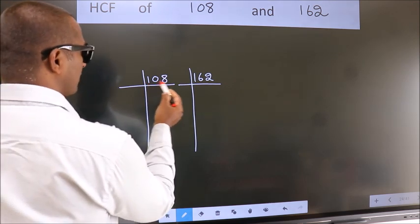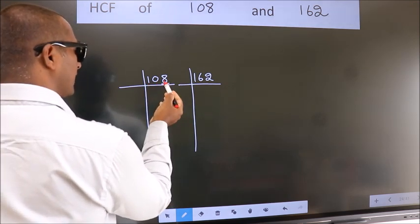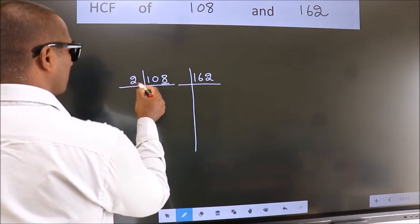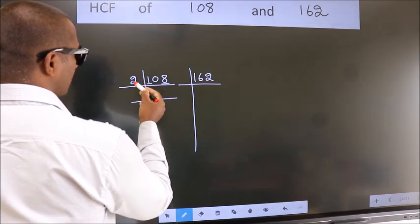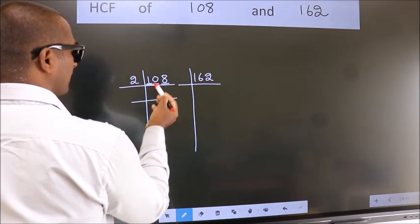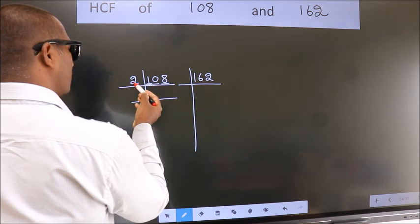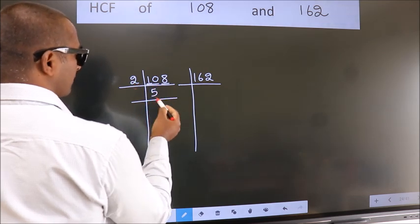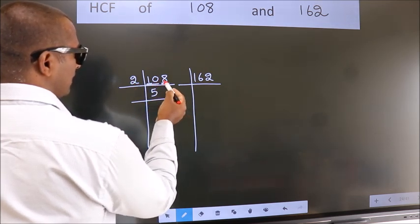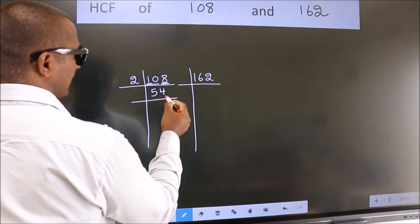In this number, last digit 8, even number, so take 2. First number 1, smaller than 2, so 2 numbers 10. When do we get 10 in 2 table? 2 fives 10. The other number 8, when do we get 8 in 2 table? 2 fours 8.